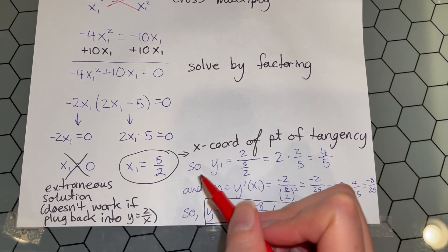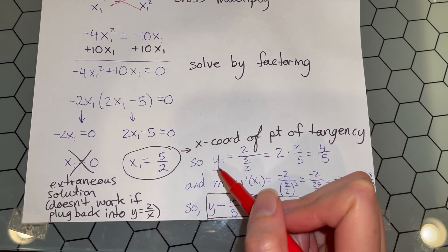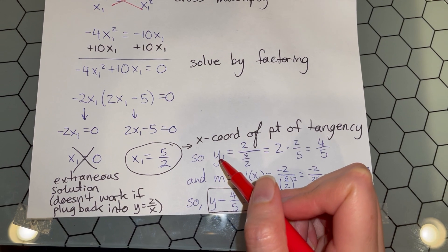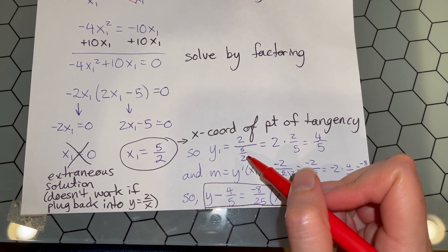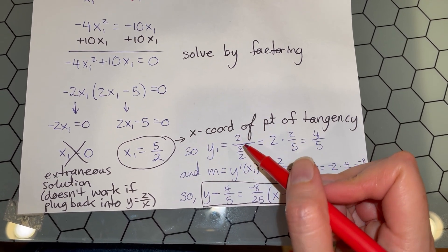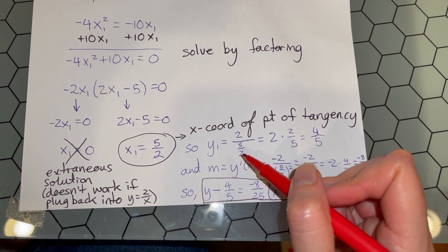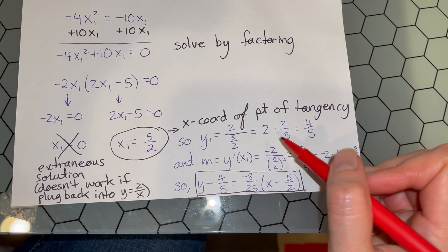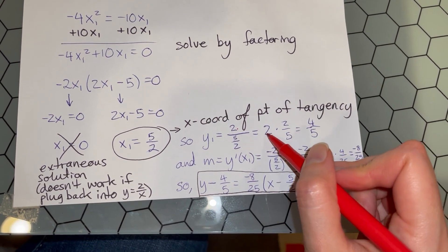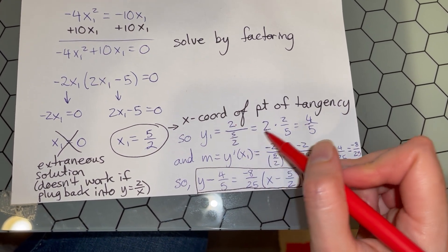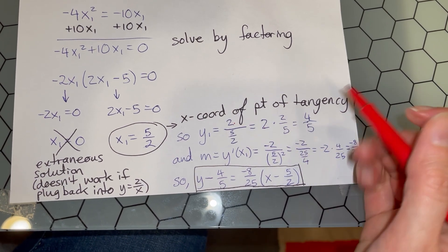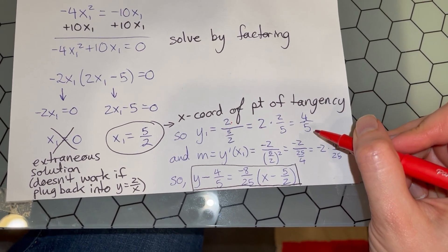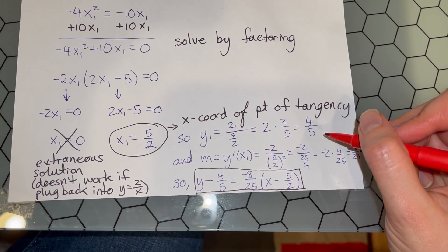Next we find our y-coordinate. y₁ = 2/x₁ = 2/(5/2). This is division of fractions. You divide fractions by multiplying by the reciprocal: 2 × 2/5 = 4/5 as our y-coordinate at the tangent line.